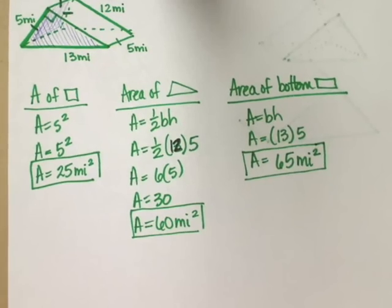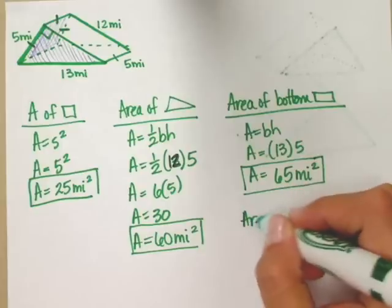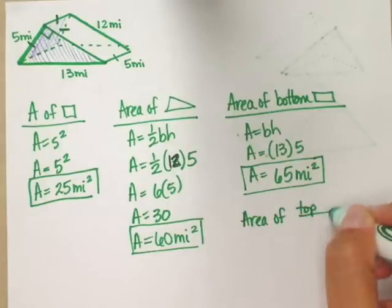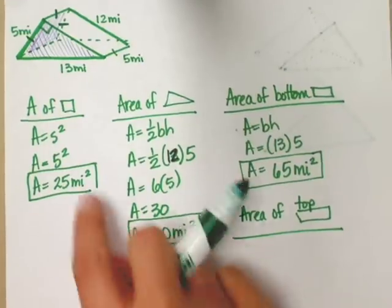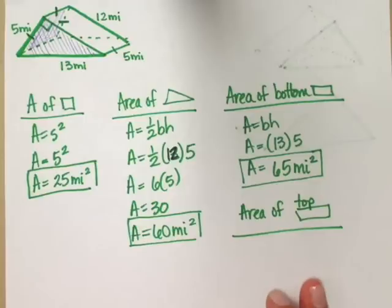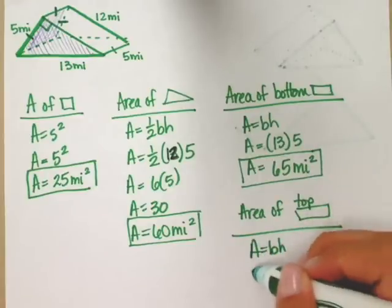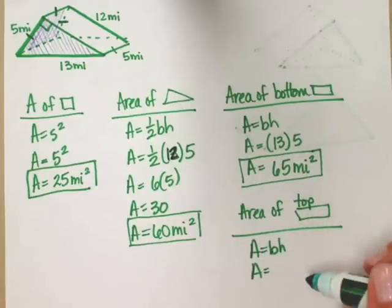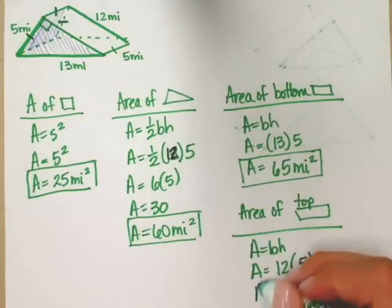It would have been nice if they were the same size, but unfortunately they're not. So we do one more time: area of top rectangle. And I promise it makes it so much easier if you keep everything organized. If you just have work thrown all over the place, then you're going to be real sad. Okay, so area equals base times height. The base for this one is 12 and the height is still 5. 12 times 5 equals 60 miles squared.